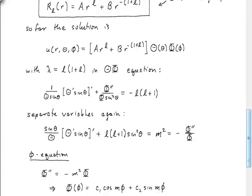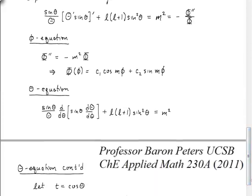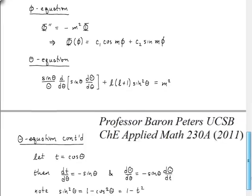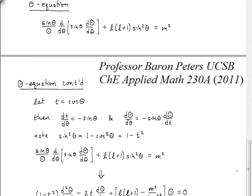So that gives us a phi equation. That is just the usual harmonic oscillator equation. And it's going to give us phi of phi is c1 cosine m phi and a sine m phi term as well. So the theta equation is a bit more difficult. That is the associated Legendre's equation. Well, it's not really quite yet the associated Legendre's equation. What we have to do first is to borrow a leap of insight from Legendre and substitute that t is equal to cosine of theta in this equation.